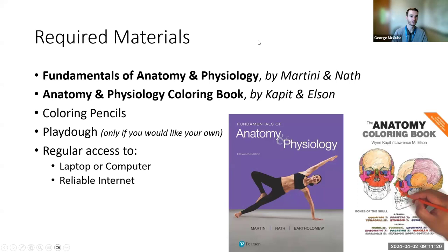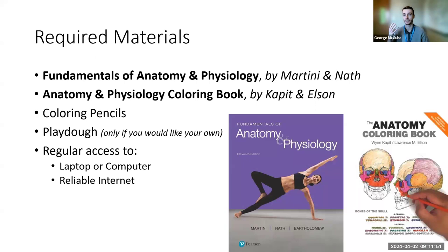You will absolutely need the textbook: Fundamentals of Anatomy and Physiology by Martini and Knapp. You'll use it for both ANP 1 and ANP 2. Any edition should be fine — new editions mainly update figures and examples while the factual text stays largely the same — so an earlier edition will work and should be much cheaper.